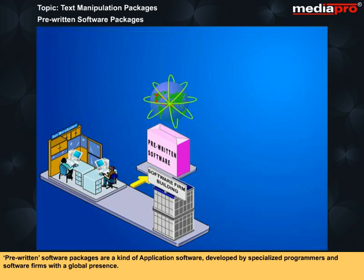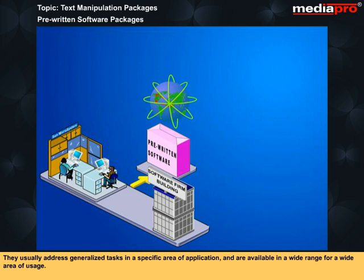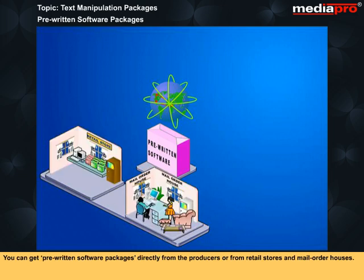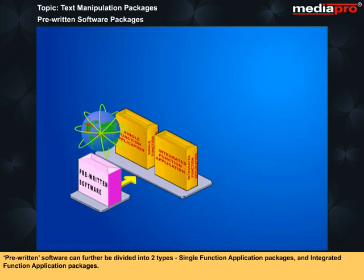Pre-written software packages are a kind of application software developed by specialized programmers and software firms with a global presence. They usually address generalized tasks in a specific area of application and are available in a wide range for a wide area of usage. You can get pre-written software packages directly from the producers or from retail stores and mail-order houses. Pre-written software can be divided into two types: single-function application packages and integrated-function application packages.